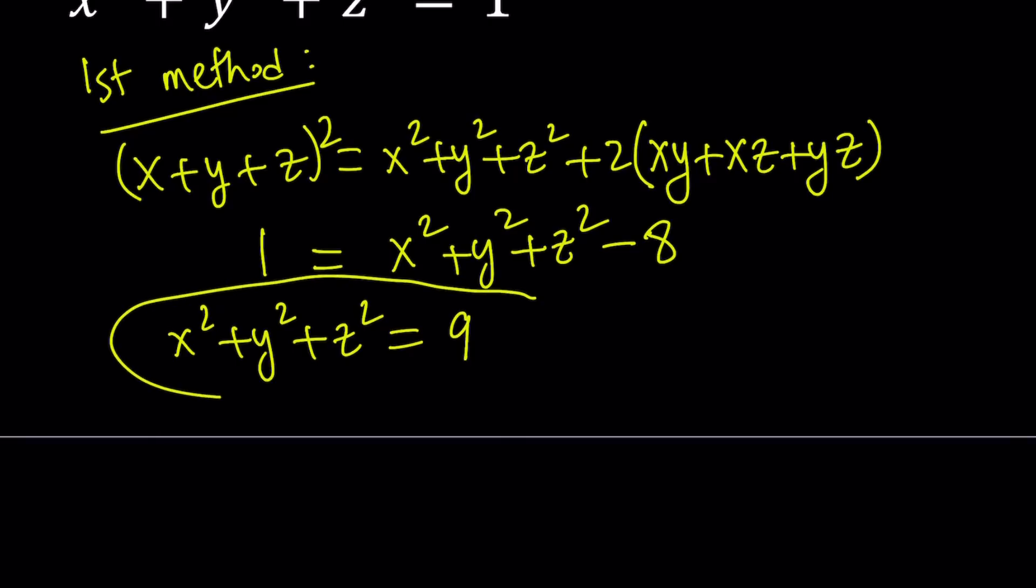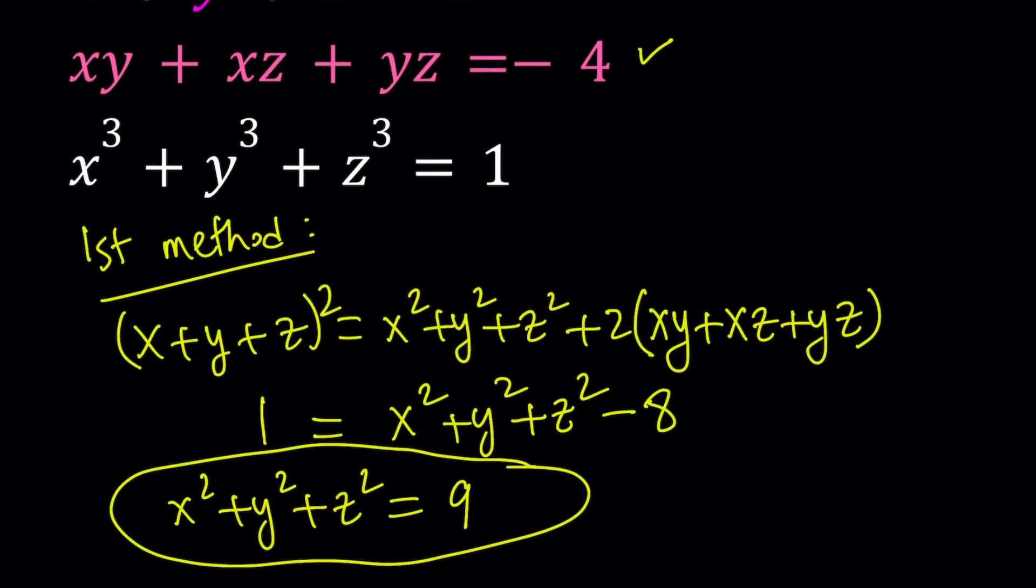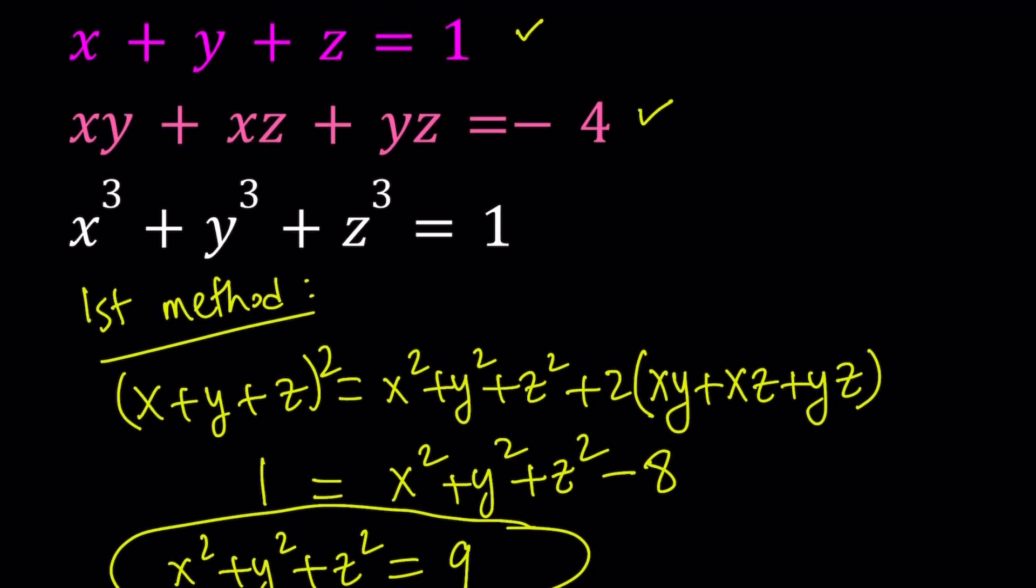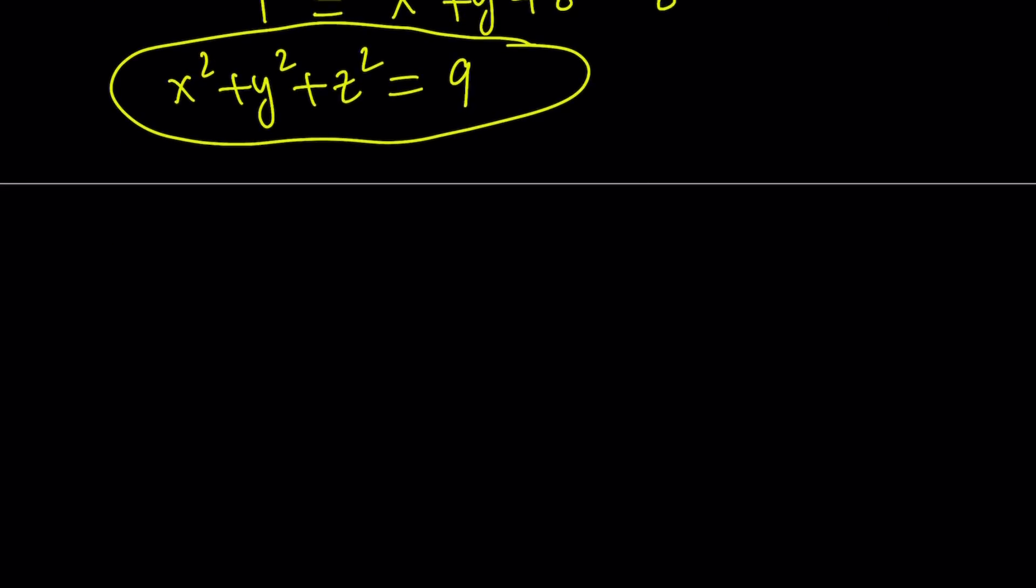Another motivation behind finding x squared plus y squared plus z squared is to get to the sum of cubes, because we now know the sum of the squares and the sum of x, y, z. Great. So next step, you could probably guess this, is multiplying those two expressions.